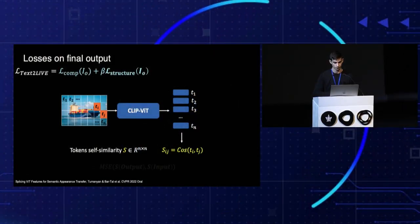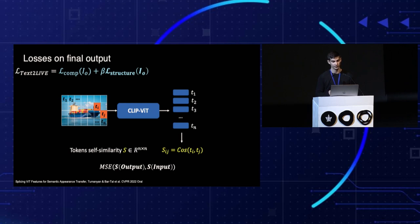We extract these tokens and construct a self-similarity matrix, which measures the cosine similarity between each pair of tokens. This matrix serves as the structural representation of the image. We want the self-similarity of the output image to match that of the input. Intuitively, defining this loss in the CLIP space provides additional constraints to the resulting representation of the output image.